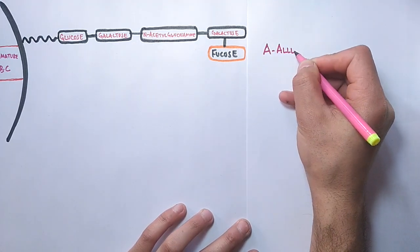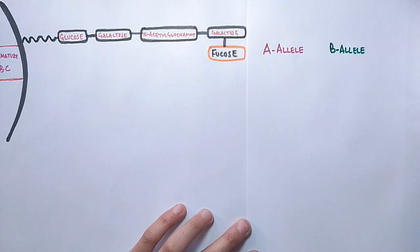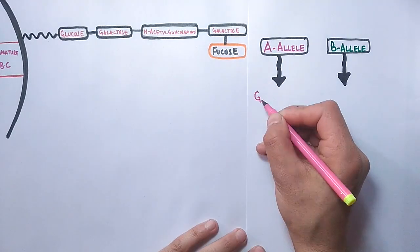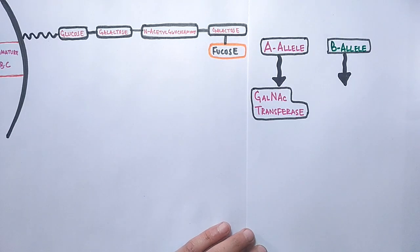Now we have individuals expressing A allele and individuals expressing B allele. The A allele codes for an enzyme called GalNAc transferase or simply N-acetyl galactosamine transferase.